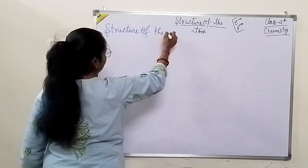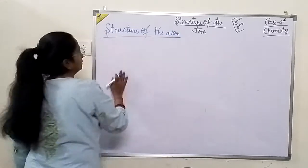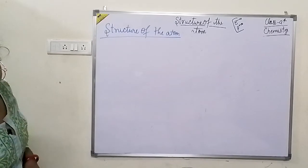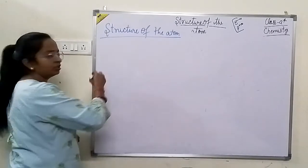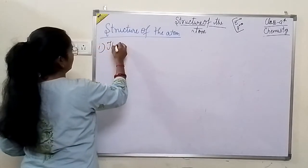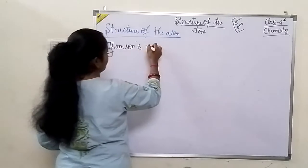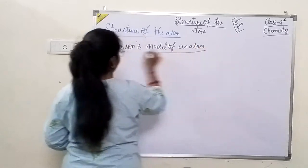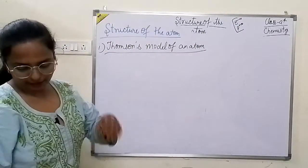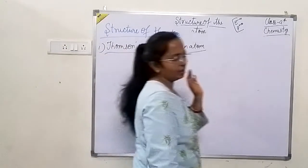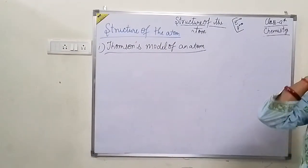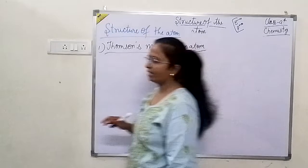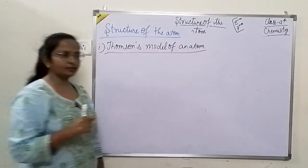Structure of the Atom — तो जो सबसे पहला structure का model दिया है वो Thomson ने दिया है: Thomson's model of an atom। एक चीज़ पहले बता रही हूँ — जिन्होंने proton को सबसे पहले identify किया था वो Goldstein थे। उन्होंने 1886 में discover किया था।